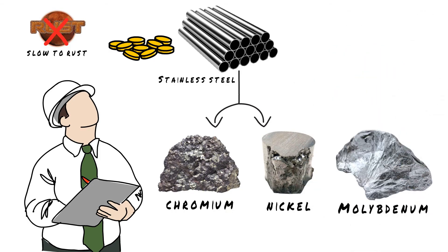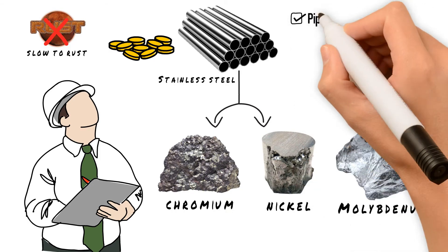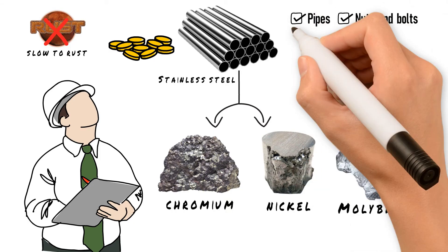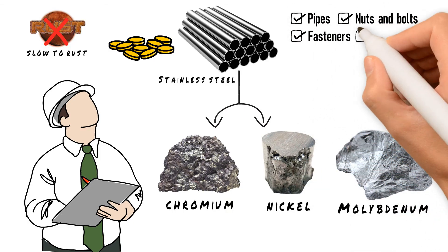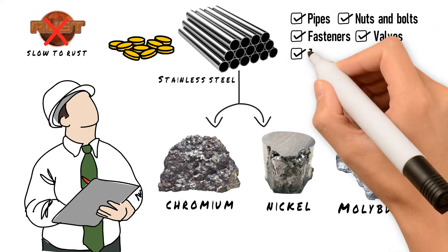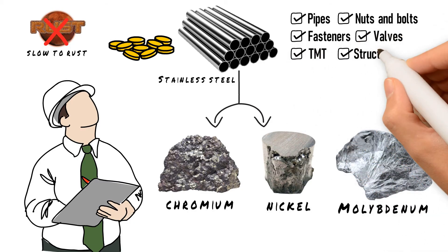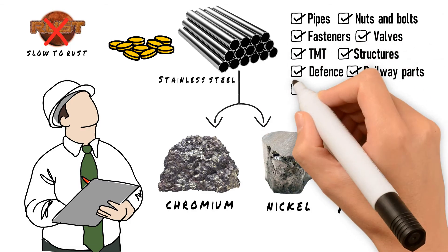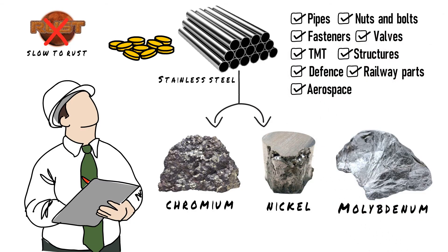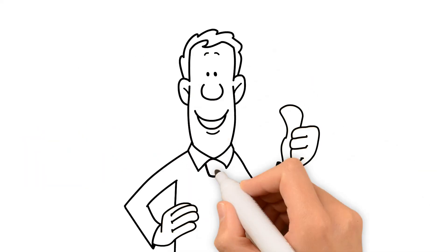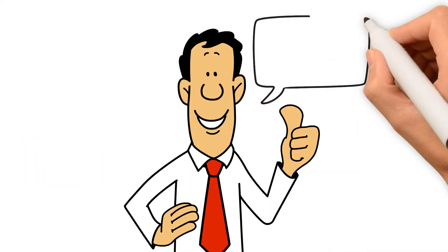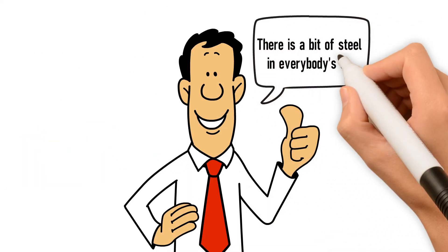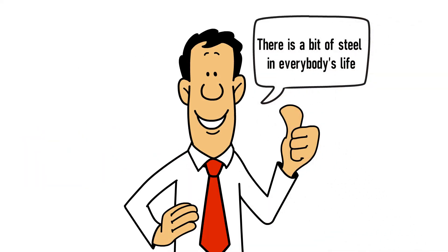Steel is used everywhere — from pipes, nuts and bolts, fasteners, valves, TMT, structures, defense, railway parts, aerospace, and so on. Therefore it can be said that there is a bit of steel in everybody's life.